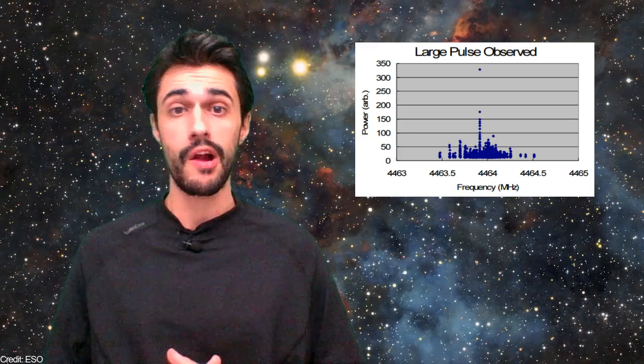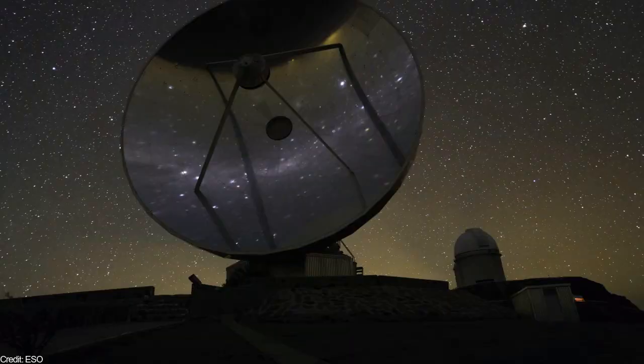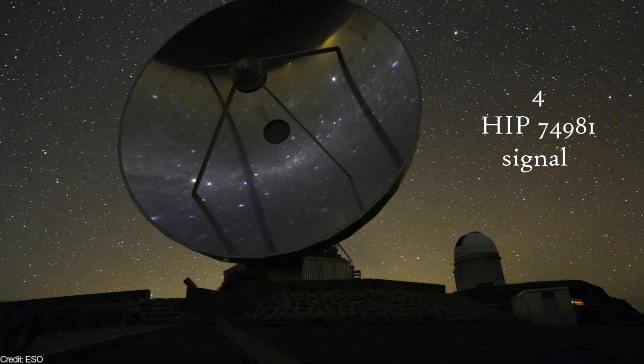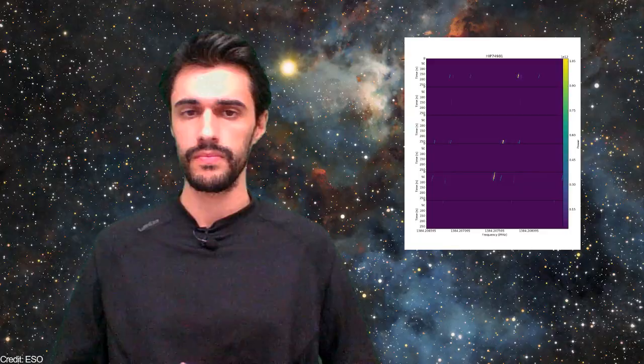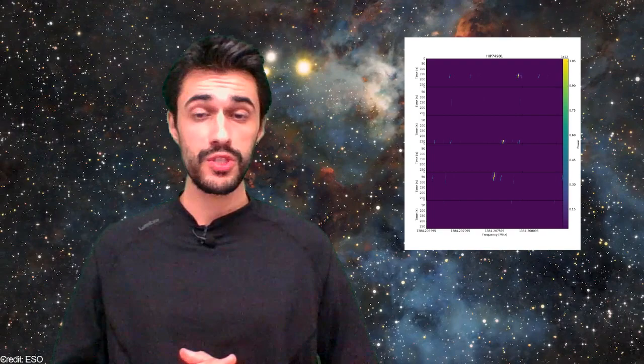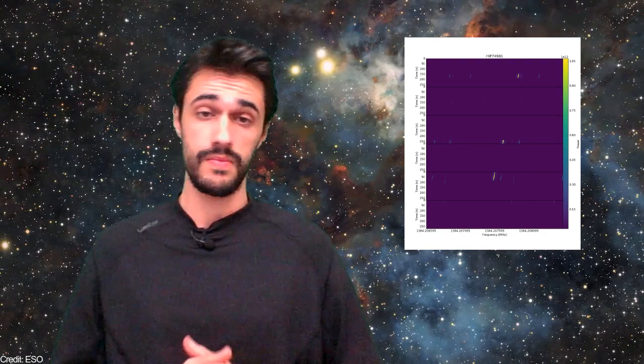The signal had a frequency of 4,462 megahertz. In 2017, Breakthrough Initiatives observed almost 700 stars in the search for possible extraterrestrial signals. The result was a total of 11 interesting signals, one of them coming from the K-type star Hipparcos 74981, located 91 light-years away.